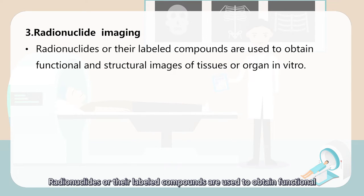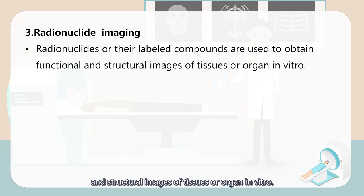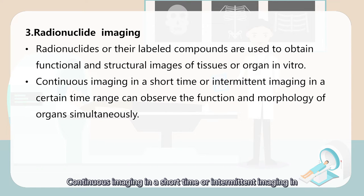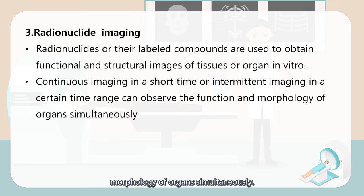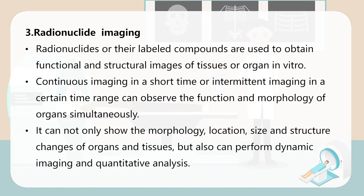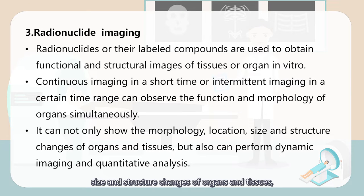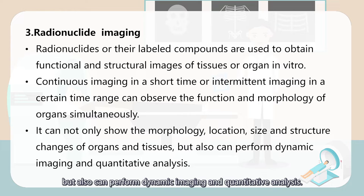Radionuclide or its labelled compounds are used to obtain functional and structural images of tissue or organ in vitro. Continuous imaging in a short time or intermittent imaging in a certain time range can observe the function and morphology of an organ simultaneously. It can not only show the morphology, location, size, and structural changes of organ and tissue, but also can perform dynamic imaging and quantitative analysis.